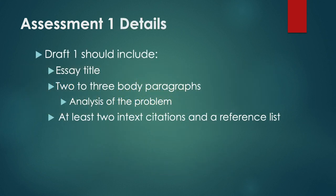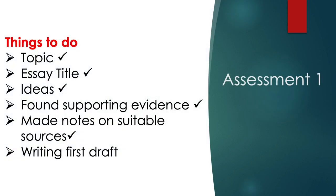Some further reminders about Assessment 1: Draft 1 should include a narrowed essay question, two to three body paragraphs analysing the problem, and you need at least two in-text citations and a reference list. I hope that you're making progress. You should have your topic and title, found ideas with supporting evidence, and made notes on suitable sources. Now you need to be writing your first draft so that you can submit before the deadline.